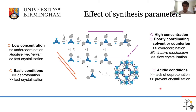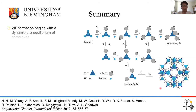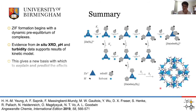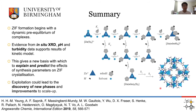In summary of this first part: ZIF formation begins with a dynamic pre-equilibrium of complexes, and we have evidence from X-ray diffraction, pH, and turbidity to support that model. This gives us a new basis to predict and explain the effects of synthesis parameters on ZIF crystallization. At low concentrations, an additive mechanism with under-coordination results in fast crystallization; at high concentrations with over-coordination or poor counter-ions, an eliminative mechanism slows crystallization. We might exploit this in future to discover new phases and improve scale-up for industrial purposes.